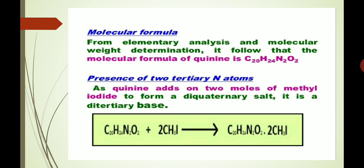We will discuss its constitution or the structure. First, we will take its molecular formula. From the elemental analysis and molecular weight determination, it follows that the molecular formula of quinine is C20H24N2O2.